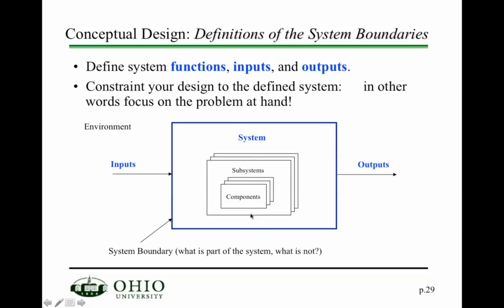You need to identify what is part of your system and what isn't — what tasks and functions are included. Later, you can take this system and break it down into subsystem components. You also need to clearly identify the inputs and outputs of your system. For a computer system, inputs could include a keyboard and outputs a display, but there may also be other IO devices. You need to identify what you want to go in and out of the system.